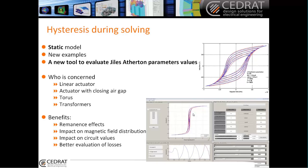Also, if you remember last year, in Flux 12 we implemented a new hysteresis model. This hysteresis model is still something new for us, and we now have more experience and more examples. Just to remember, it's a static model. This year, we added a new tool with this model to evaluate Jiles-Atherton parameters values. You now have access to hysteresis material, and to use this kind of material you need the coefficients. We provide you a tool that can help you obtain the different coefficients from the BH curve, to take into account all the hysteresis effects and mainly the remanence effects.